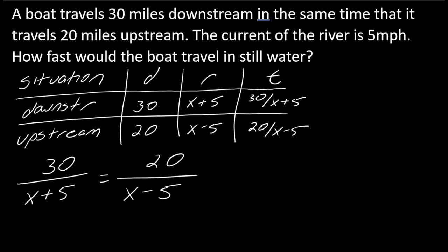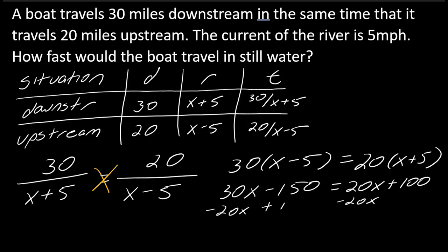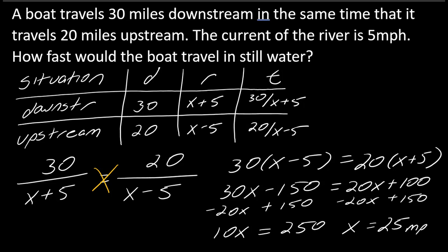Since it's a proportion, I can cross multiply to solve. This becomes 30 times (x minus 5) equals 20 times (x plus 5), which gives 30x minus 150 equals 20x plus 100. Subtracting 20x from each side and adding 150 to the other side gives 10x equals 250. Dividing both sides by 10, x equals 25. That's 25 miles per hour — the speed of the boat in still water.